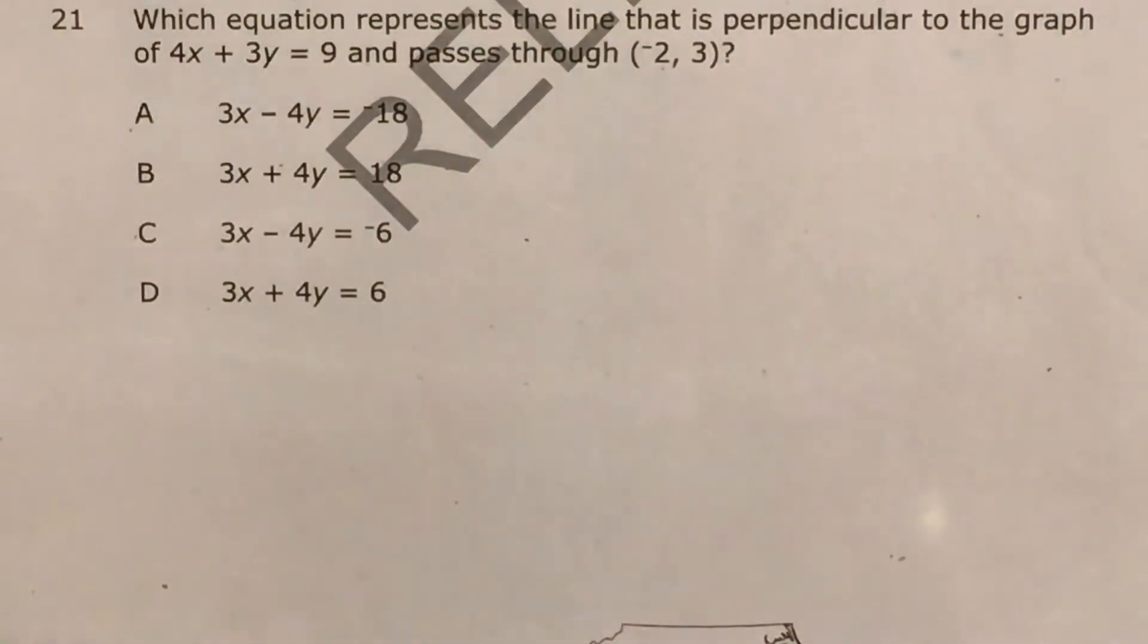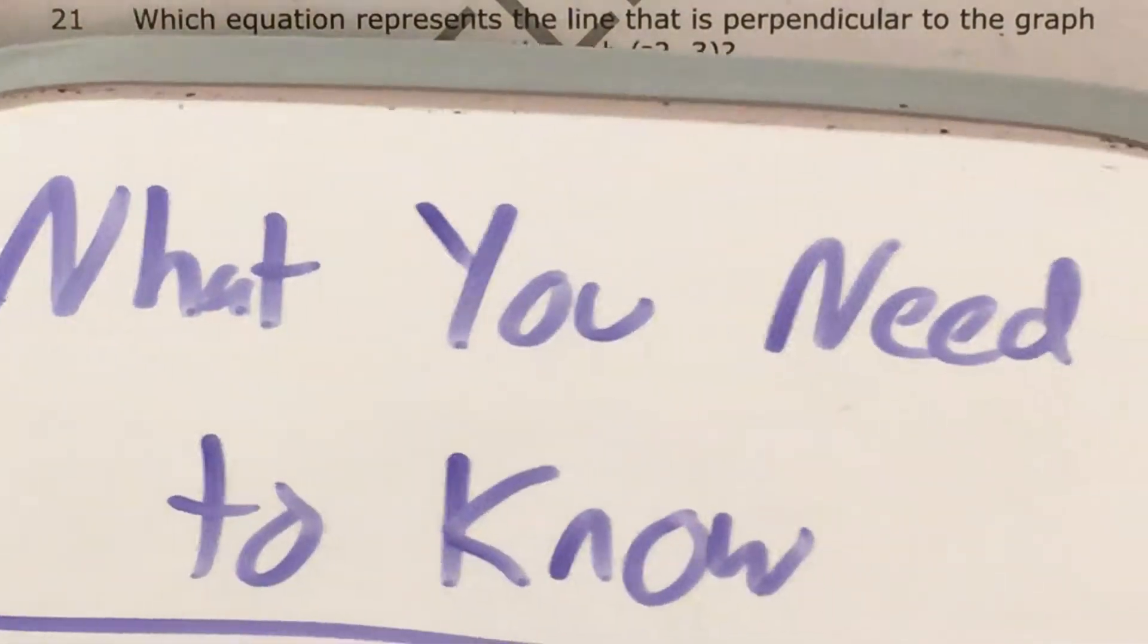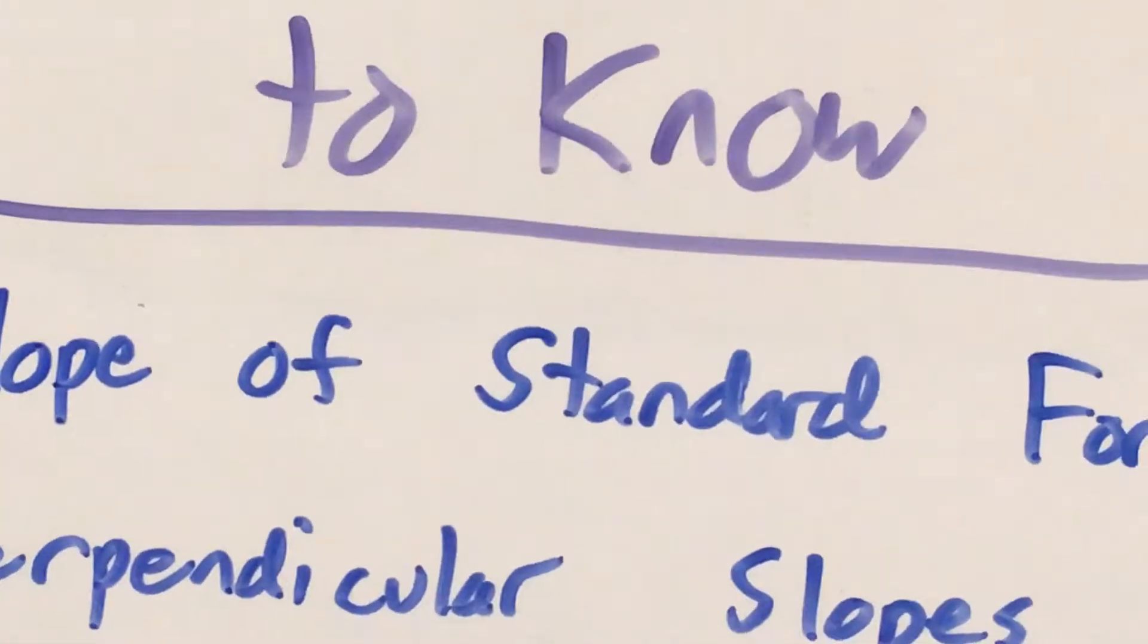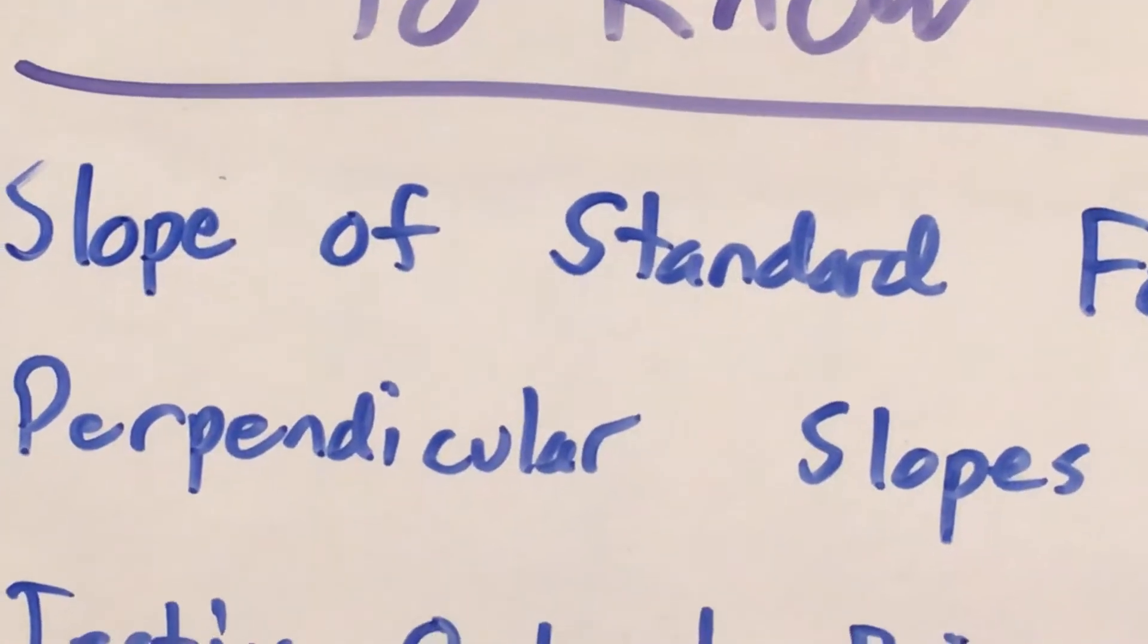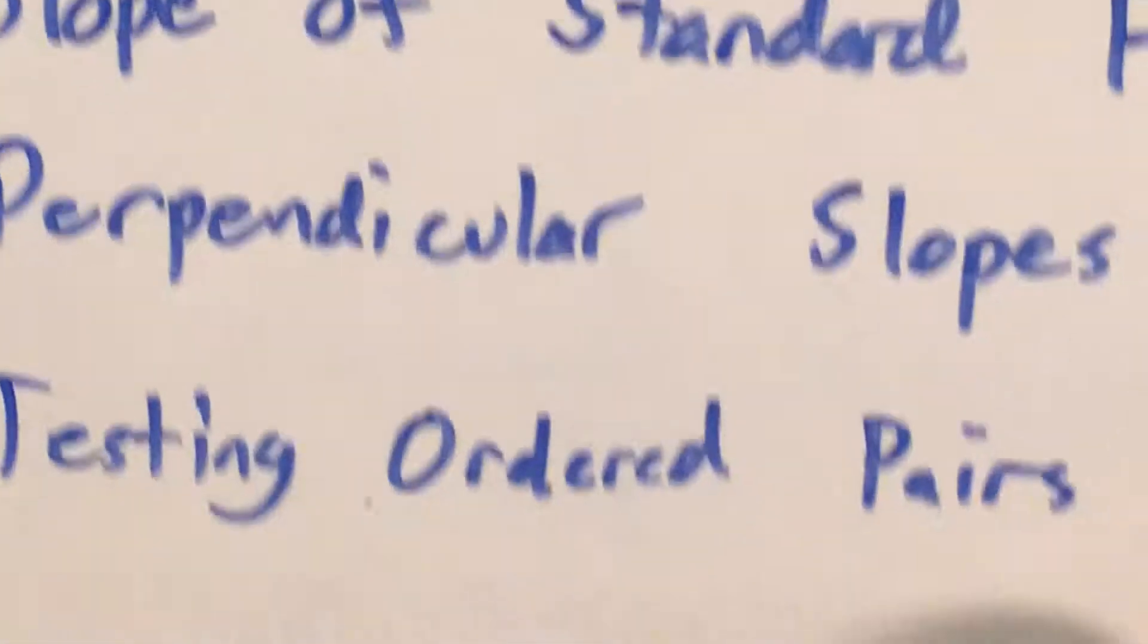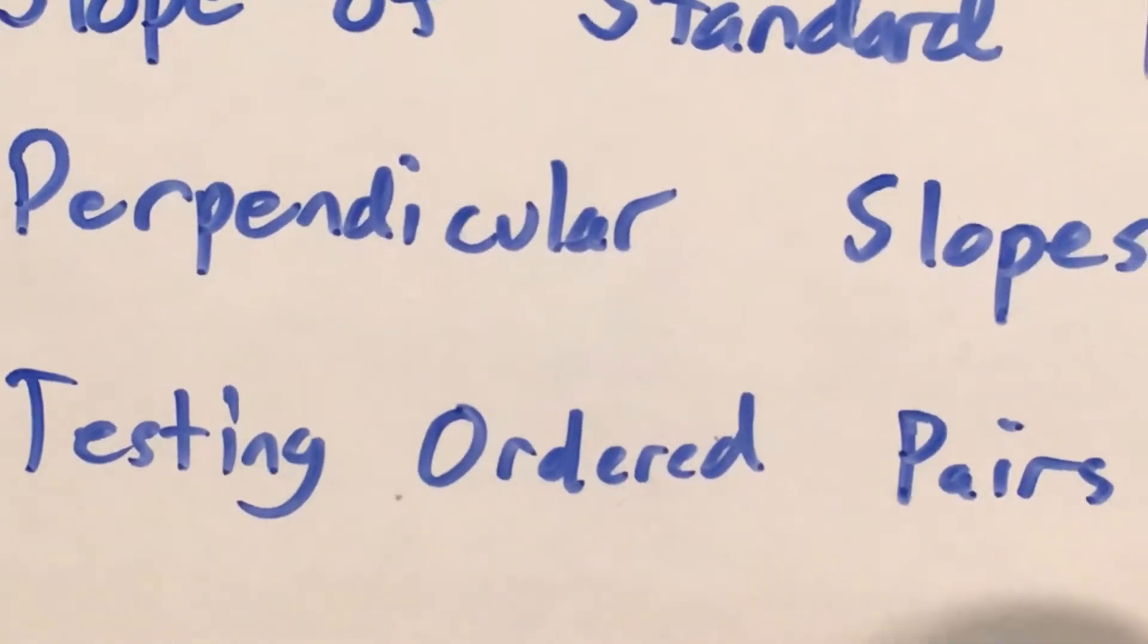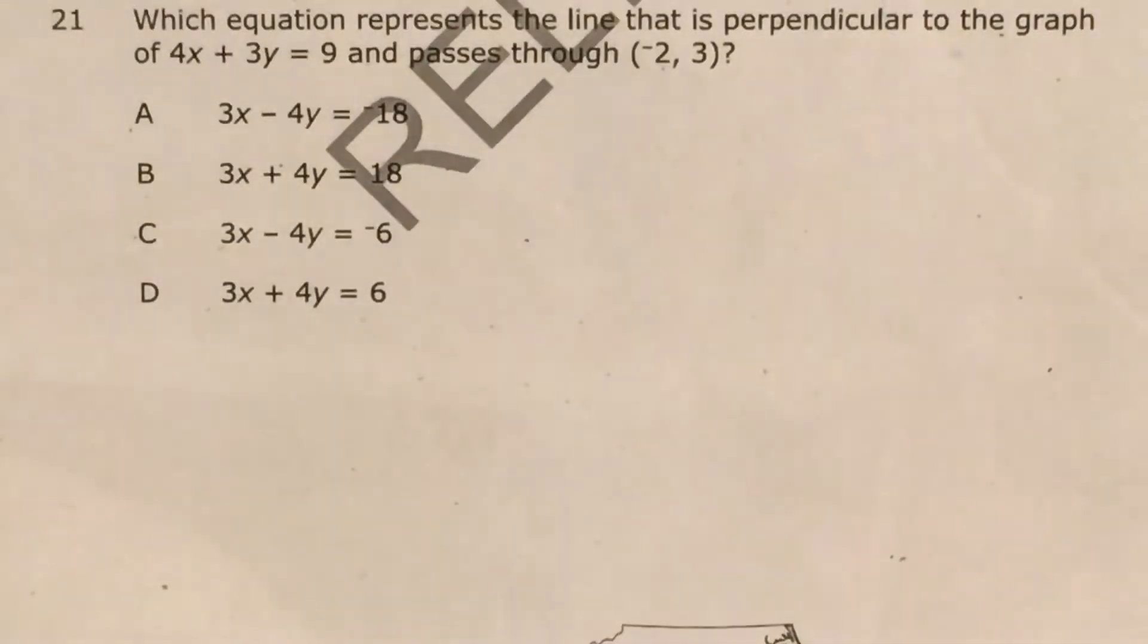Now in order to do a question like this well, we'll need to know how to find slope from a linear equation in standard form, what it means for slopes to be perpendicular and the math behind that. And there's going to be one step near the end where it will be good for us to test an ordered pair as a solution to one of these equations. So let's go ahead and start by talking about how to actually get slope from standard form.